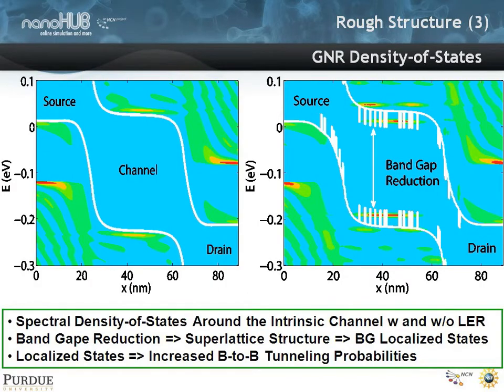Why is that superlattice point of view relevant? In an ideal structure, shown on the left, we have the density of states in the graphene structure. Around the intrinsic channel, we have bands sitting there, and if you look carefully, there's a ground state of S-like symmetry and excited states above it. You have bound states because of interference effects from a barrier here and another barrier there — a quasi-bound state confined above the barrier.